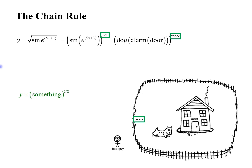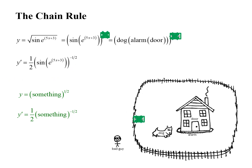The derivative of something to the 1 half power — you just use the power rule. You get y prime equals 1 half times something to the negative 1 half power. So we start writing our derivative: 1 half something to the negative 1 half power. That takes care of the fence, and the bad guy can get in.